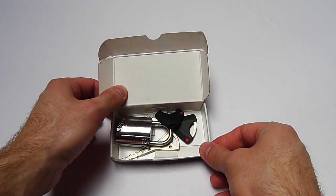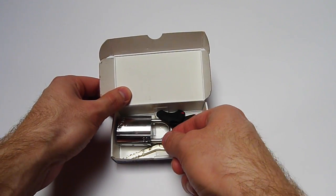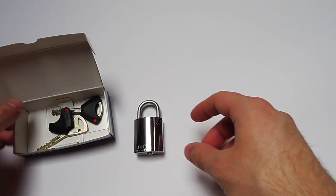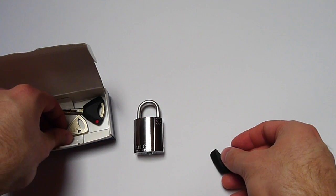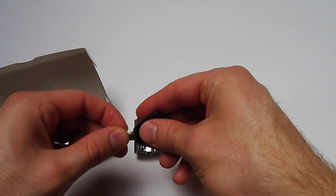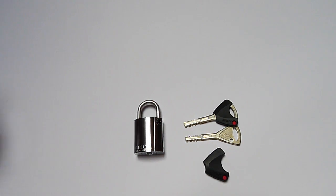So when we open the package we will find the padlock along with two keys. In this case it comes with the Abloy ProTec core, not with the ProTec 2 core yet, but with the Abloy ProTec core.